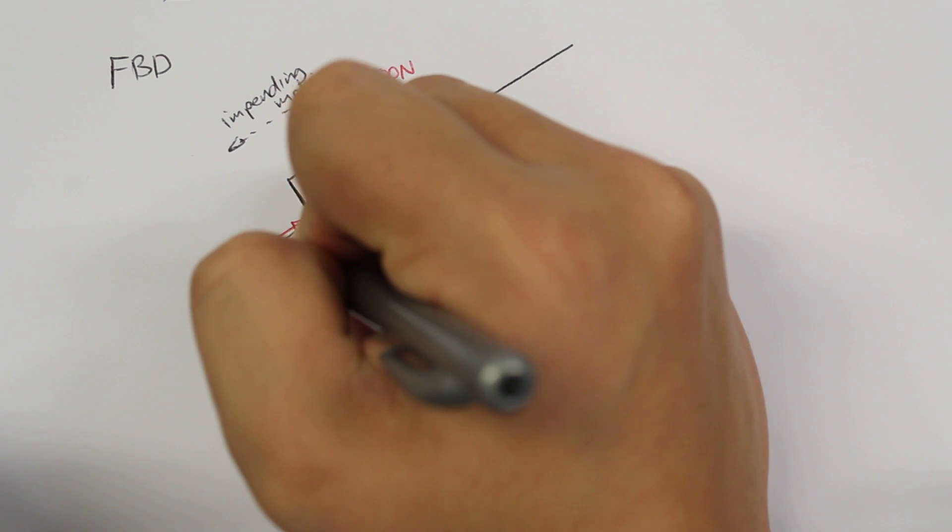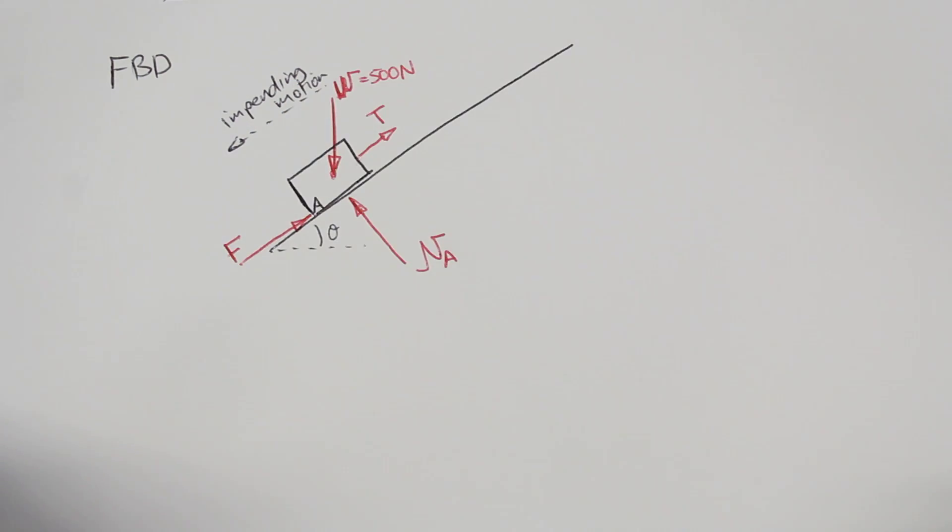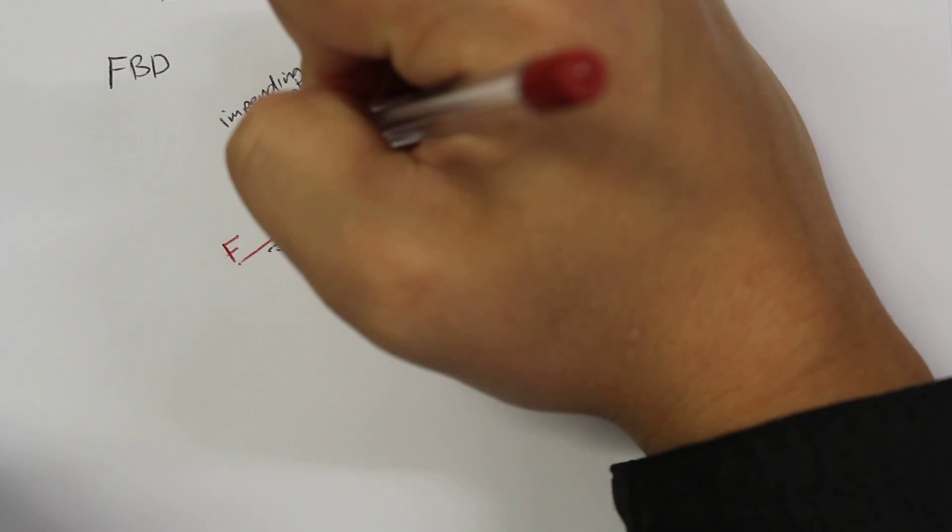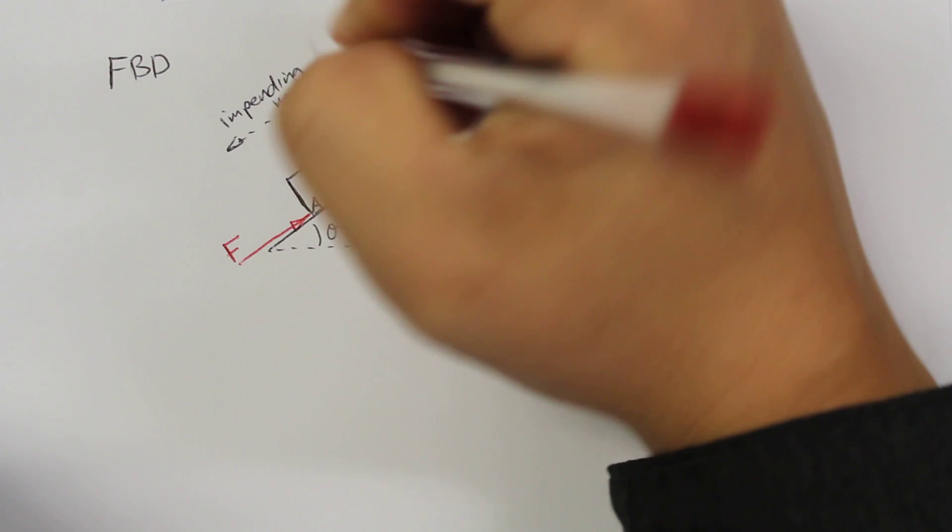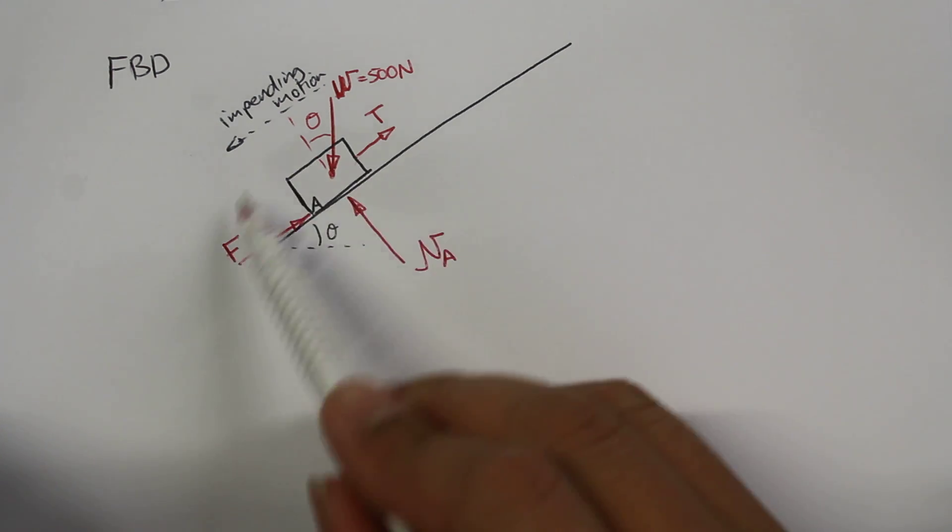Now if the plane has got an incline here of theta, which we do not know yet, it's what we're trying to figure out. But this angle here will also be equal to theta. The weight force will be at an angle theta there.